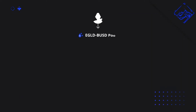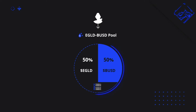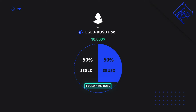Let us start by imagining you provide liquidity on MyerExchange in the EGLDBUSD pool. To simplify things, we will imagine you are the only one providing that liquidity — in other words, you own the whole EGLDBUSD pool. Say you provided a total of $10,000 in liquidity, half of it in Egold and the other half in Binance USD. We will imagine the price of 1 Egold being 100 BUSD, so your pool has 50 Egold and 5,000 BUSD in liquidity.